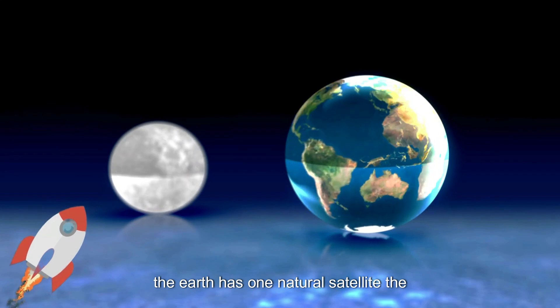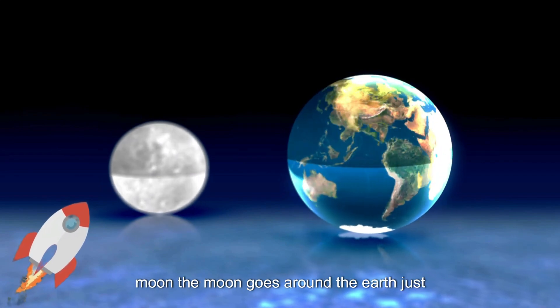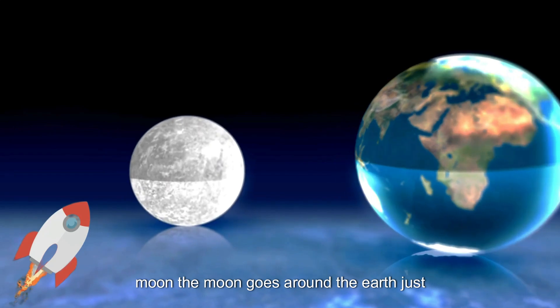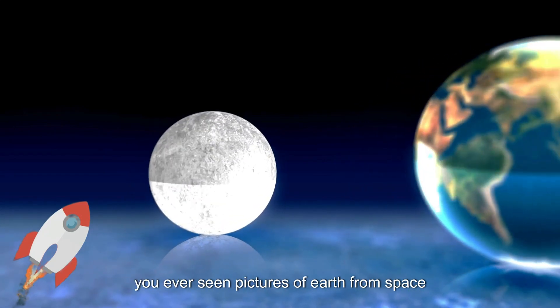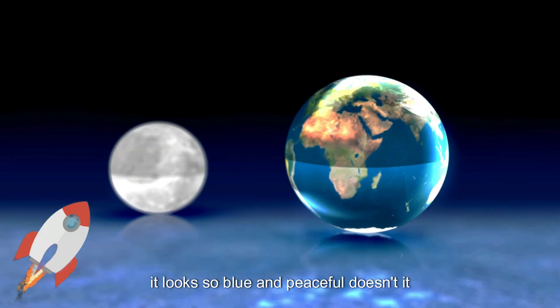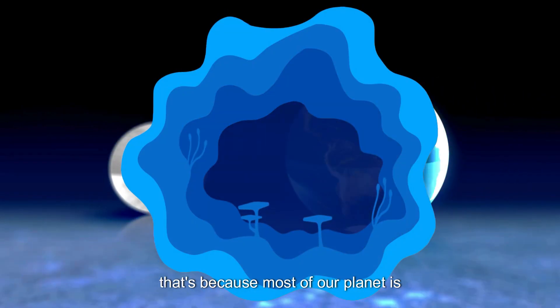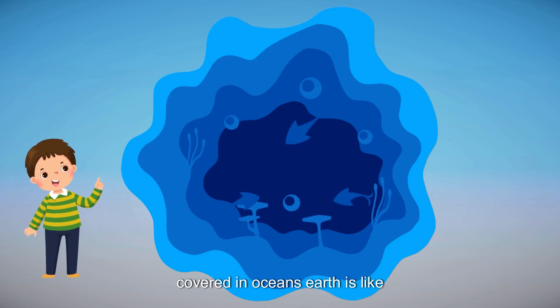The Earth has one natural satellite, the Moon. The Moon goes around the Earth, just like how the planets go around the Sun. Have you ever seen pictures of Earth from space? It looks so blue and peaceful, doesn't it? That's because most of our planet is covered in oceans.